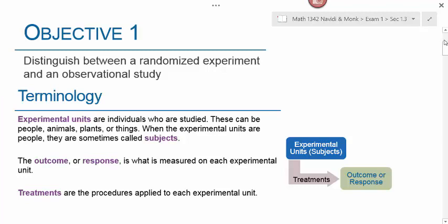The terminology we're going to use here: experimental units are individuals who are studied. These can be people, animals, plants, or things. When the experimental units are people, we often refer to them as subjects. The outcome or response is what is measured on each of the experimental units or subjects. The treatments are the procedures applied to each experimental unit.